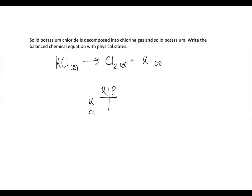On our reactant side, we only have one atom of chlorine, but on our products we have two. So we can multiply potassium chloride by two to have the same number of chlorine atoms on both sides. Then to balance potassium, we can multiply solid potassium by two to have two atoms of potassium on both sides. Checking our chart, we now have a balanced chemical equation.